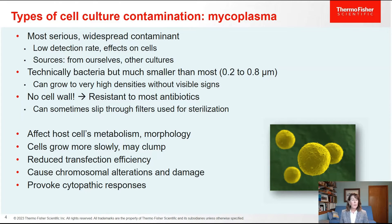Mycoplasmas have very negative effects on your cells — they can affect host cell metabolism and morphology. The first clue might be that your cells are growing more slowly, with more dead cells or clumps. If you used to split cells two to three times a week and now only split them once a week, that might indicate a mycoplasma contamination. The biggest tell for me is dramatically reduced transfection efficiency. Mycoplasmas can damage the cell's DNA, cause chromosomal aberrations, provoke innate immune responses, cytopathic responses, and stress responses.